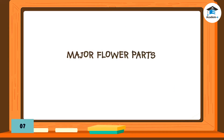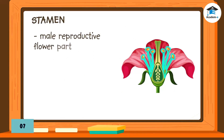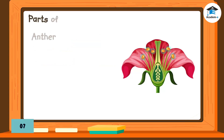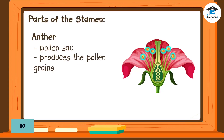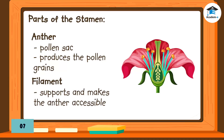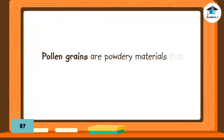The major parts of a flower include: Stamen, the male reproductive flower part that produces pollen grains. It includes the anther (or pollen sac) that produces the pollen grains, and the filament that supports and makes the anther accessible to the agents of pollination. Pollen grains are powdery materials that contain the male gamete.